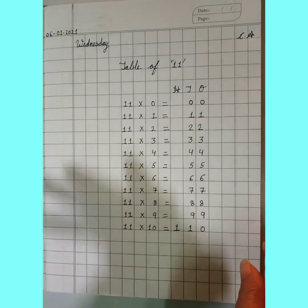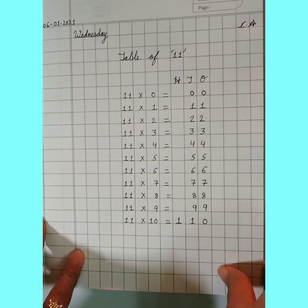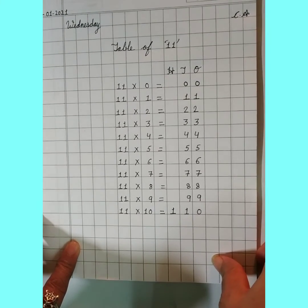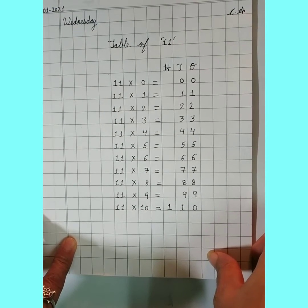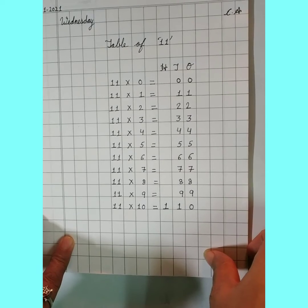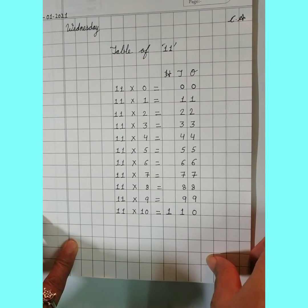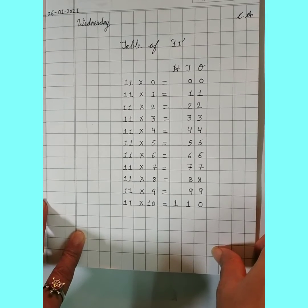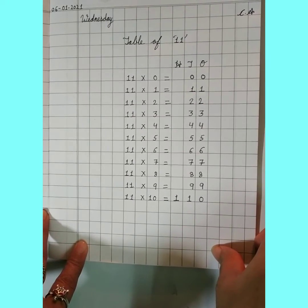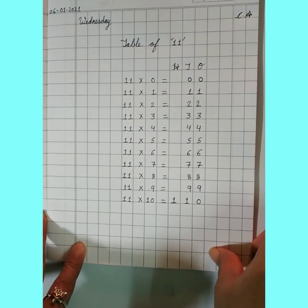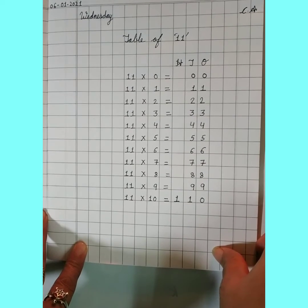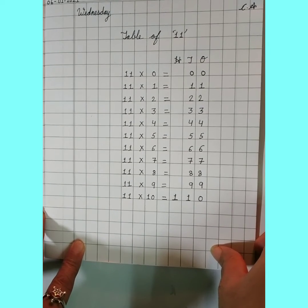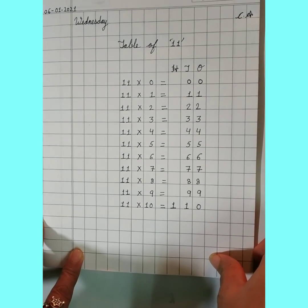Once again, we will learn better. We will repeat again. 11 by 0 is 0, 11 by 1 is 11, 11 by 2 is 22, 11 by 3 is 33, 11 by 4 is 44, 11 by 5 is 55, 11 by 6 is 66, 11 by 7 is 77, 11 by 8 is 88, 11 by 9 is 99, 11 by 10 is 110.